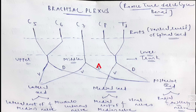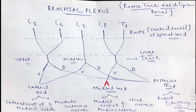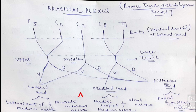Each trunk further divides into two branches: the dorsal division and the ventral division. The dorsal divisions of the upper, middle, and lower trunks all come together to form the posterior cord. The ventral divisions of the upper and middle trunks form the lateral cord. The ventral division of the lower trunk alone forms the medial cord.